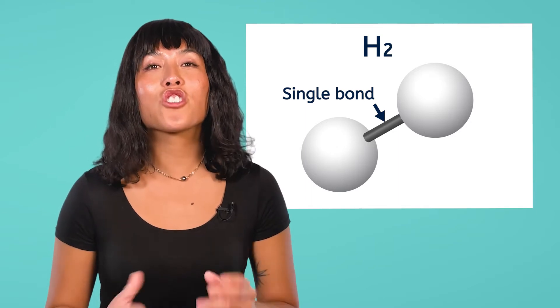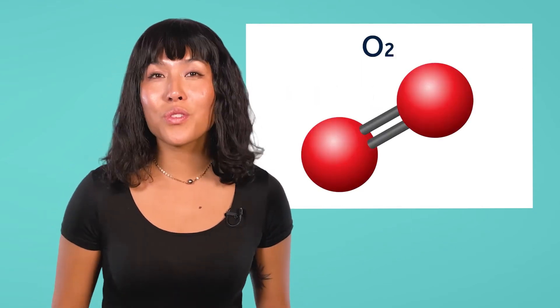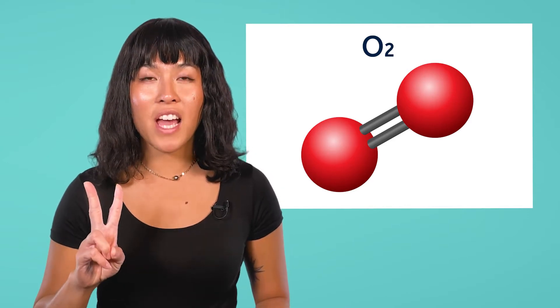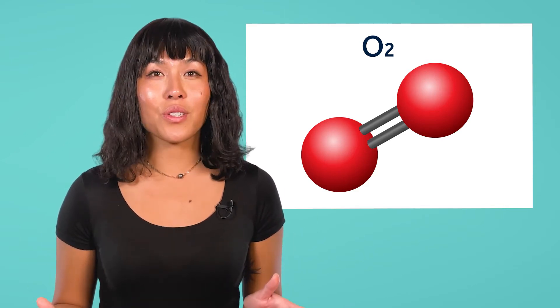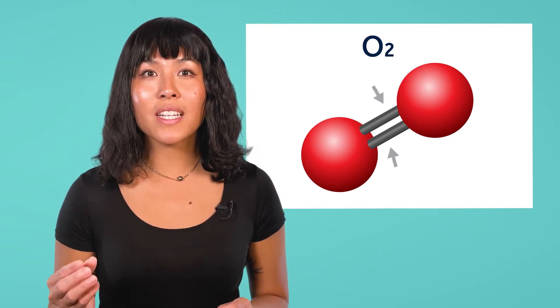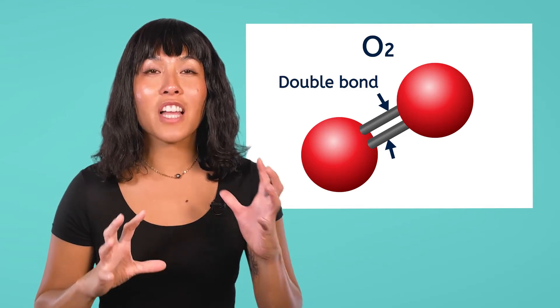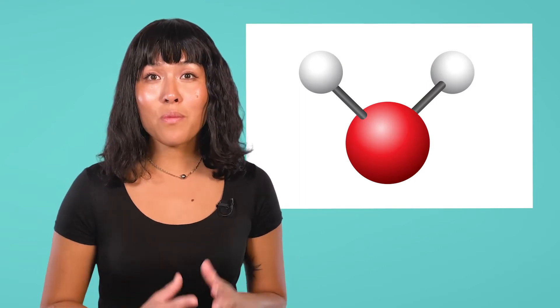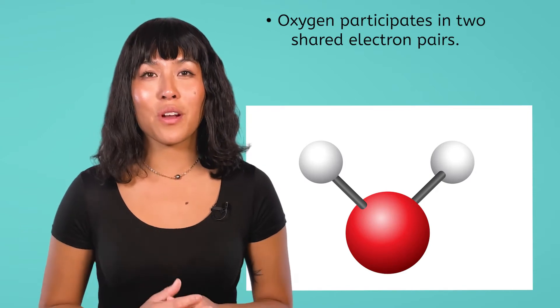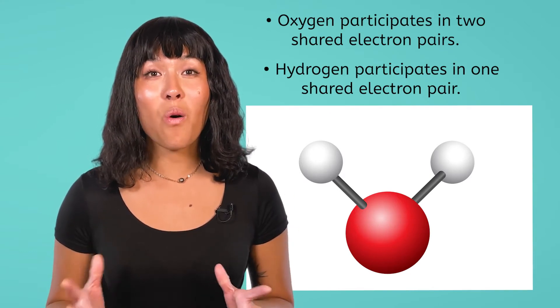Hydrogen atoms prefer to share just one pair of electrons with another atom. Now let's check out oxygen gas, or O2. H2 is bonded together with a single bond, but O2 is connected with a double bond, meaning each oxygen atom participates in two shared pairs of electrons to become stable. Oxygen can also form two single bonds, for example in water molecules. In H2O, the oxygen atom is still involved in two shared electron pairs.